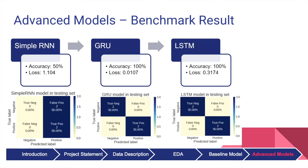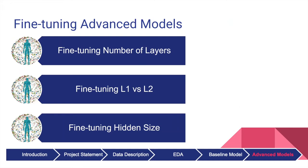In the testing set, the model with a simple RNN layer obtained a testing accuracy of only 50% — it predicted all infants as having type 1 diabetes. The models using GRU and LSTM achieved a testing accuracy of 100%. Based on the benchmark models, we fine-tuned our hyperparameters on the number of RNN layers, L1 versus L2 regularization, and the hidden size for the RNN layers.